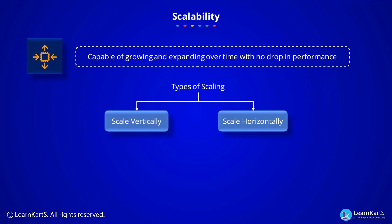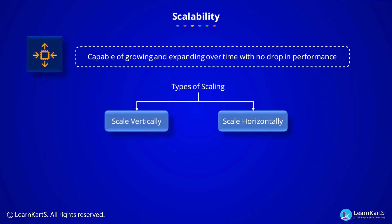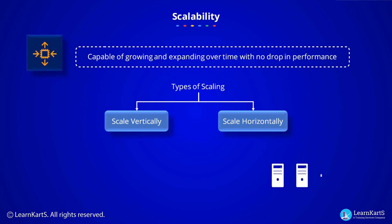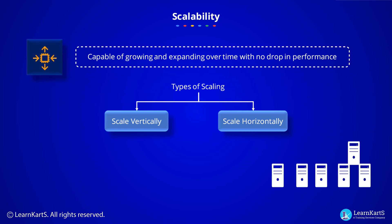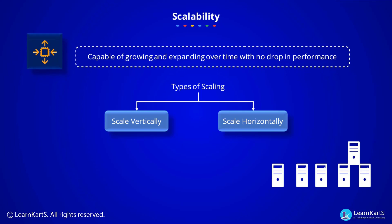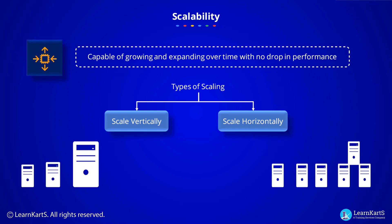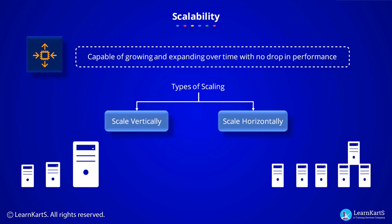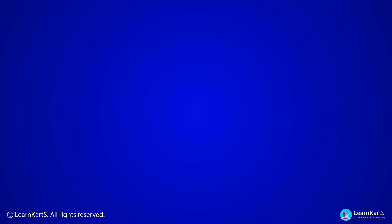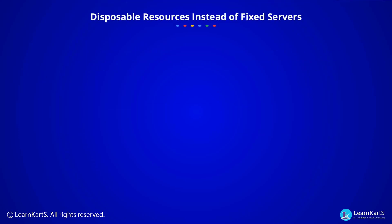Horizontal scaling means that you scale by adding more machines into your pool of resources, whereas vertical scaling means that you scale by adding more power — CPU, RAM, storage, etc. — to an existing machine.